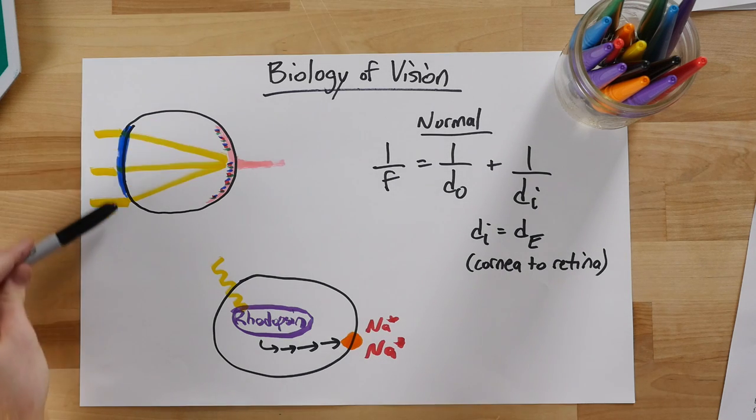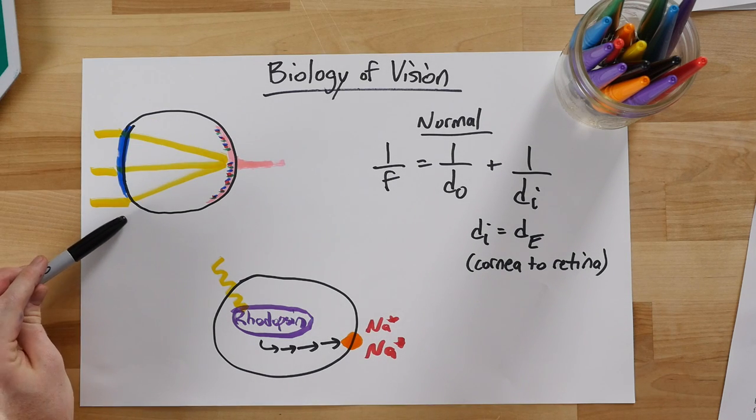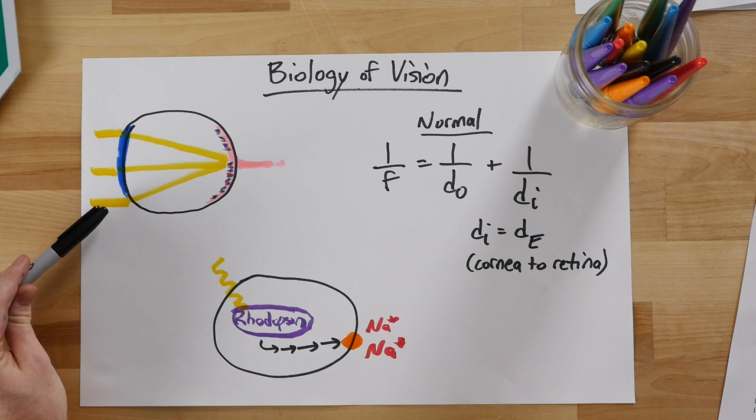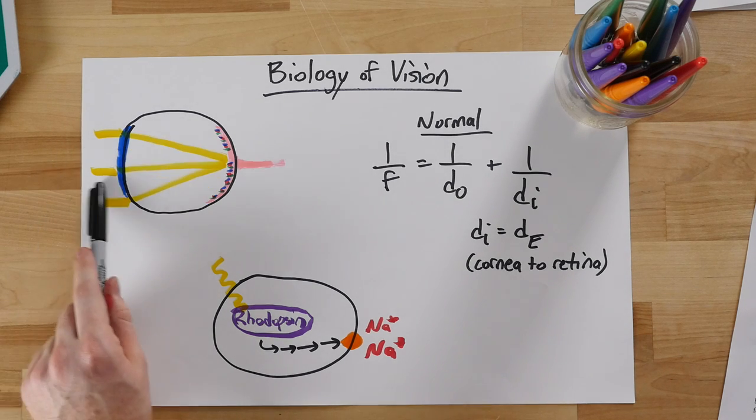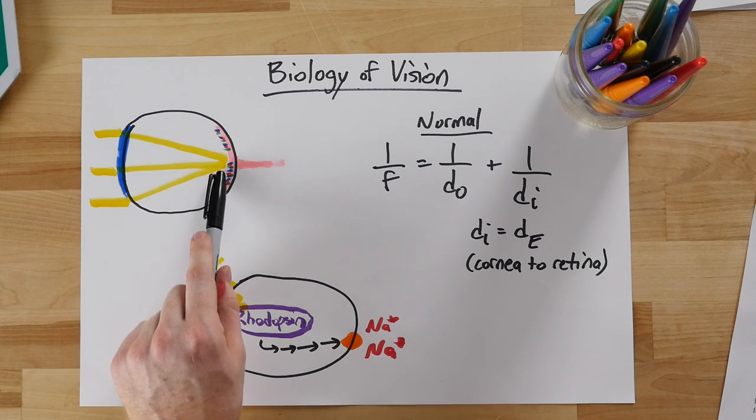The human eye has a curved cornea and adjustable lens. Together, these two elements act as a converging lens that takes light rays from an object and converges them onto our retina.